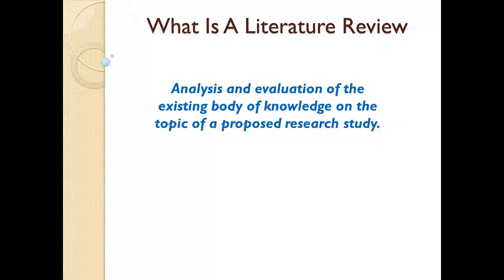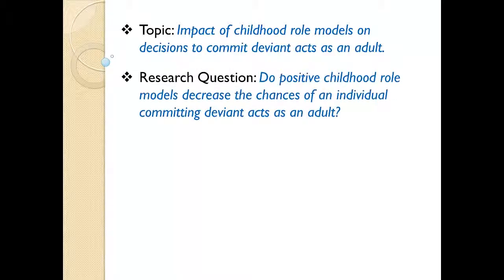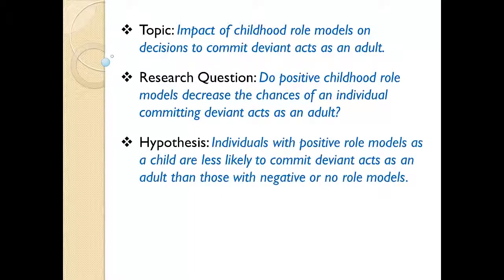Bear with me for a moment and I'll explain why these are also important. The topic of our example research study will be the impact of childhood role models on decisions to commit deviant acts as an adult. Our research question will be: do positive childhood role models decrease the chances of an individual committing deviant acts as an adult? And our hypothesis will be: individuals with positive role models as a child are less likely to commit deviant acts as an adult than those with negative or no role models.